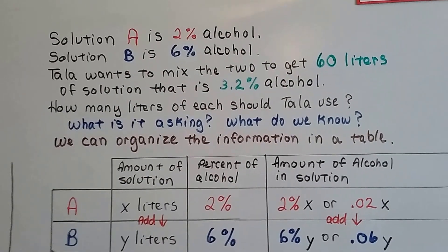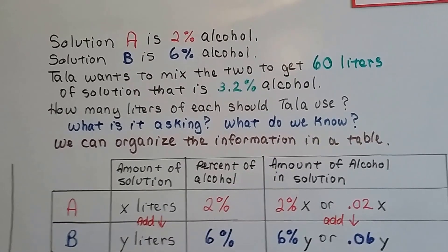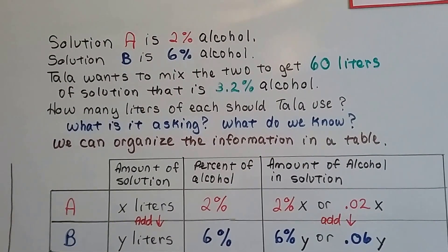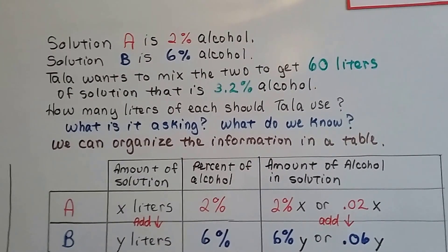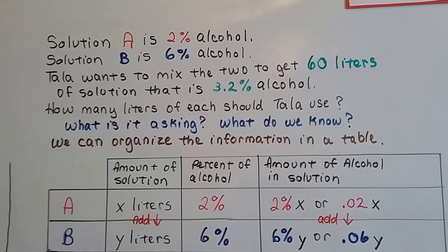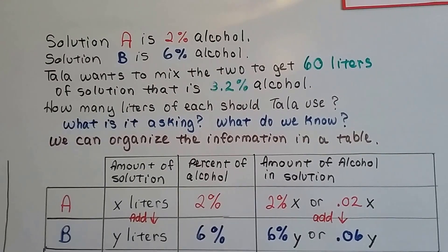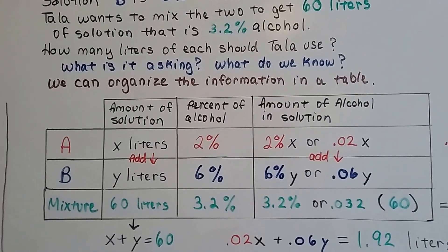How many liters of each should Tala use? What is it asking? It's asking, how is Tala going to mix that solution A and B together to get that 60 liters of 3.2% alcohol? What do we know? We know A is 2% alcohol and B is 6% alcohol. We also know that her goal is to get 60 liters of a 3.2%. So, we can organize the information into a table.